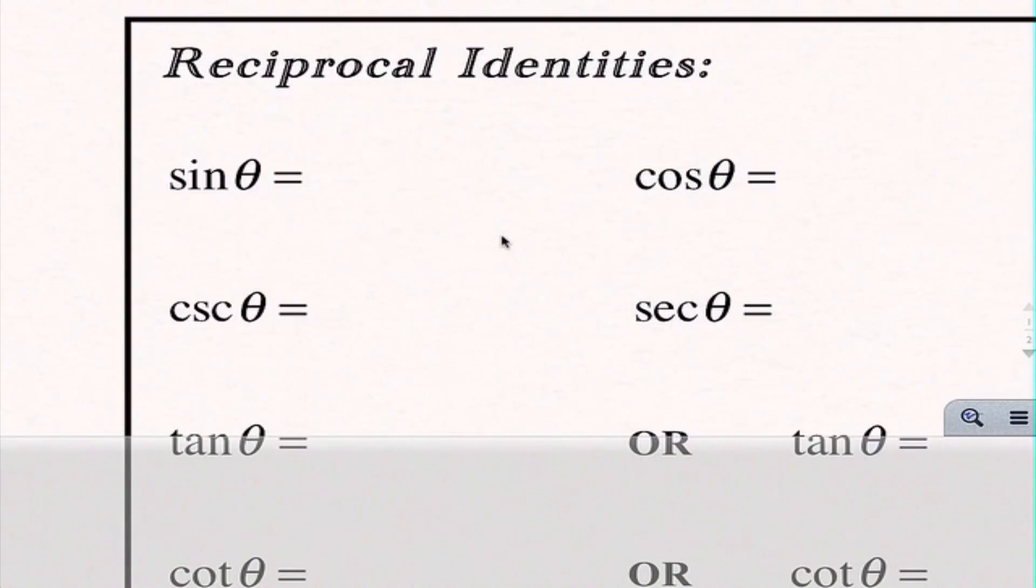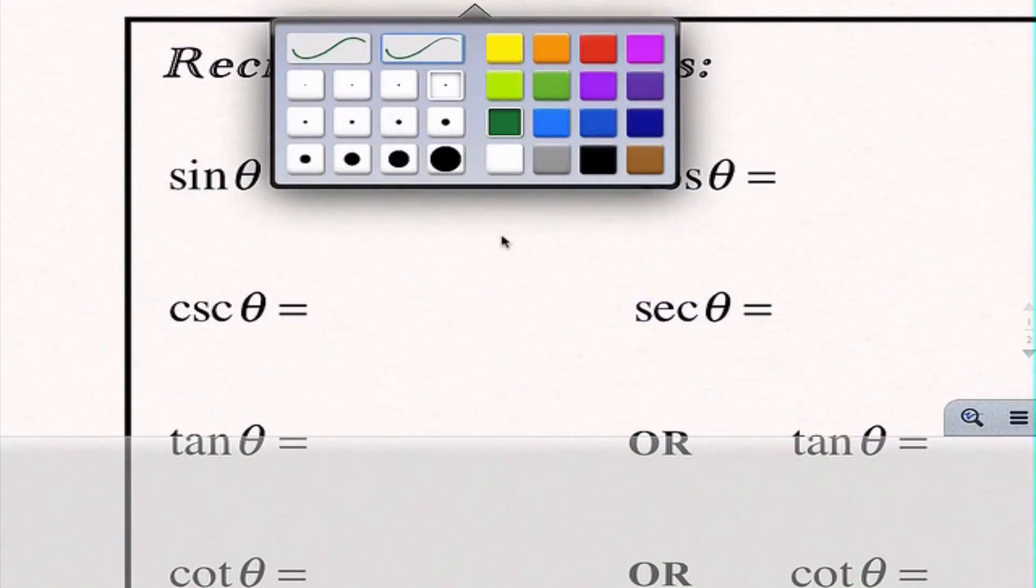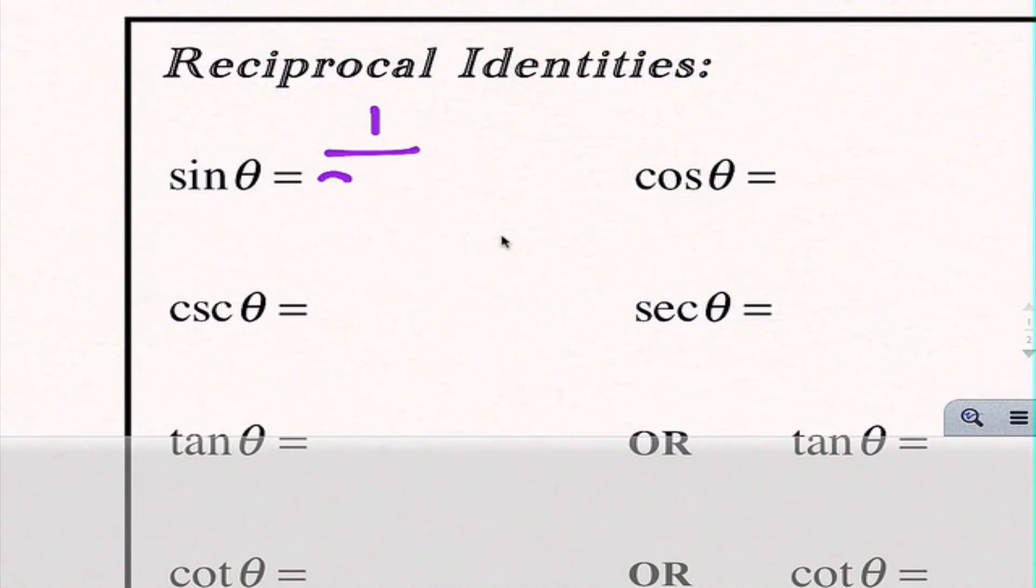We learned when we're putting stuff into our calculator that the reciprocal of sine is cosecant. So we're going to go ahead and write sine of theta is equal to 1 over cosecant of theta. I do want to point out that it's very important that we use our angle symbols. We can never just take sine of nothing. We're always taking a trig function of an angle.